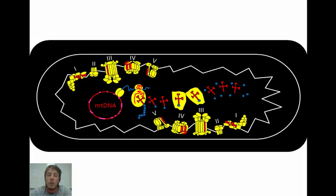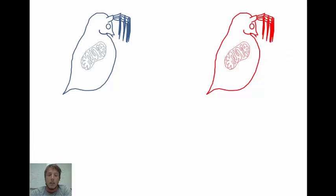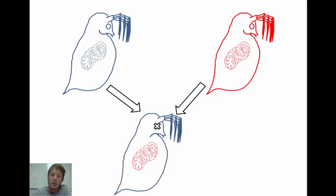Maintaining these interactions between the two genomes is very important for maintaining energy production in eukaryotes. One set of experiments that shows this very nicely is called mitochondrial replacement experiments. In these experiments, the mitochondria from one species or lineage is placed against a nuclear background from another species or lineage.